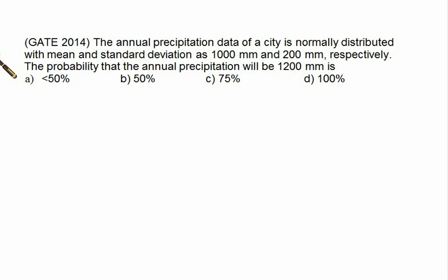The annual precipitation data is normally distributed with a mean and standard deviation of 1000 and 200 respectively. We have to calculate the probability that the annual precipitation will be 1200. We are given the value of sigma as 200, mu as 1000, and X as 1200.